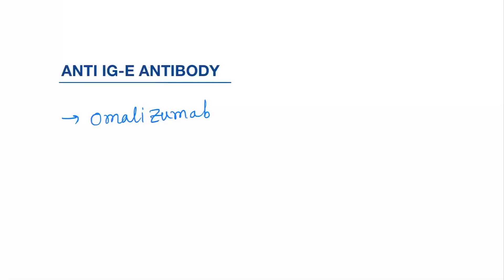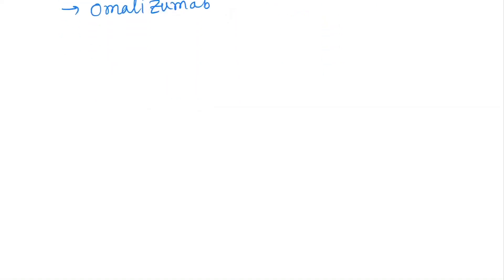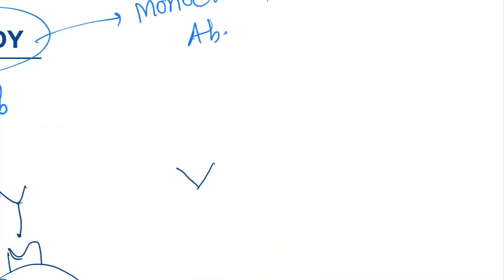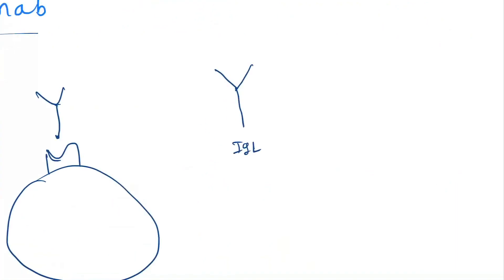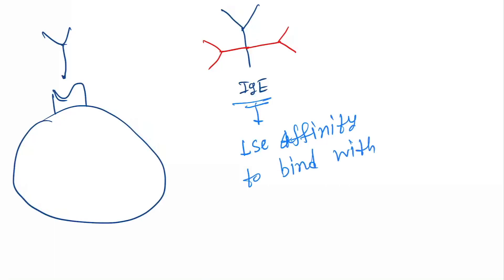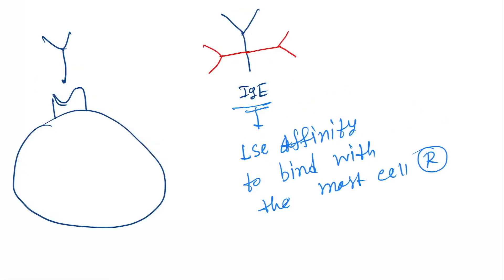Next are the anti-IgE antibodies — these are monoclonal antibodies. Normally, IgE comes and binds to the mast cell receptor. But after giving omalizumab — a monoclonal antibody — omalizumab binds to the IgE, decreasing the affinity of IgE to bind with the mast cell receptors. As a result, degranulation will not occur and bronchoconstriction will not occur.